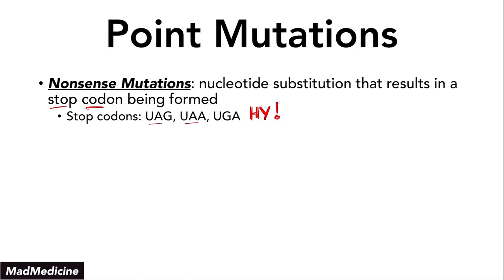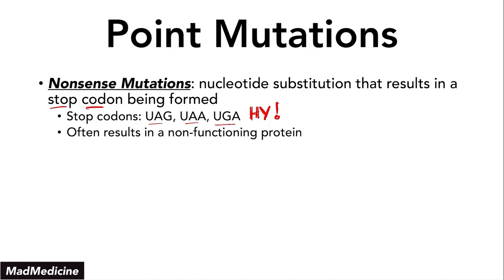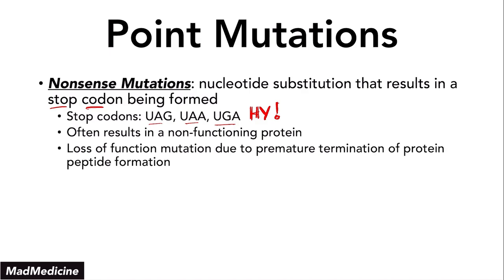Stop codons are UAG, UAA, and UGA. Write it down, memorize it, commit it to memory — do not forget this. When you get these stop codons, you will essentially stop the production of the protein. Often a nonsense mutation will result in a non-functioning protein because you are terminating the protein formation early on. This is a loss of function mutation due to premature termination of the protein peptide.